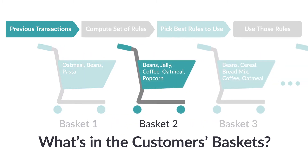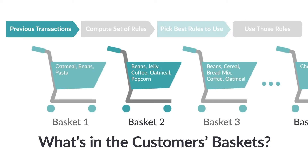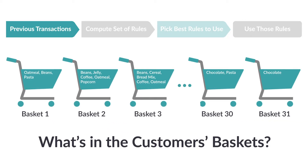Customer two has beans, jelly, coffee, oatmeal, and popcorn. We track what everybody buys — and as you can see, it's quite a list.